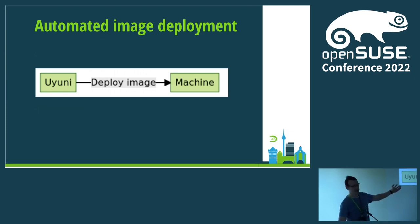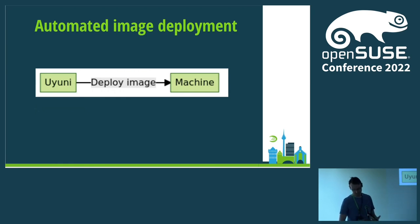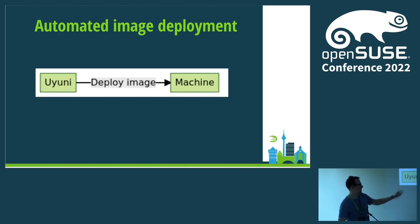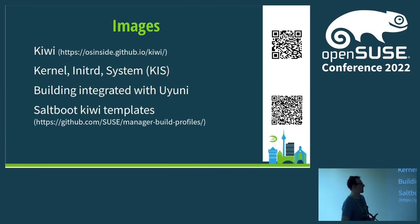Our task today: we have a Uyuni server and a target machine we want to deploy an image to. We've described what Uyuni is. Now we need to understand what 'deploy' means and what an 'image' is. We'll start with images.